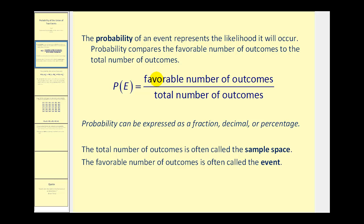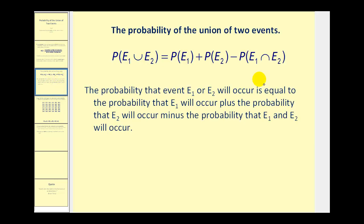Let's go and take a look at the probability of a union. So to determine the probability of a union of two events, we'll have to follow this rule, where the probability that the event E₁ or E₂ will occur is equal to the probability that E₁ will occur, plus the probability that E₂ will occur, and then minus the probability that E₁ and E₂ will occur.